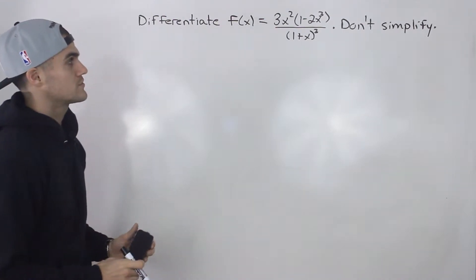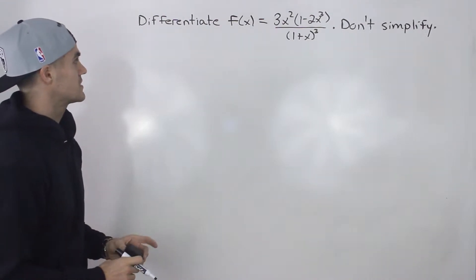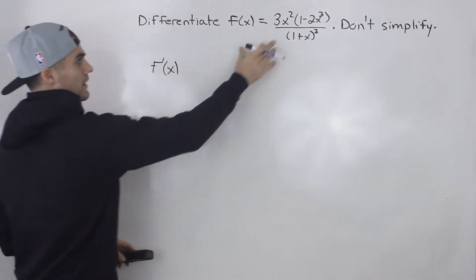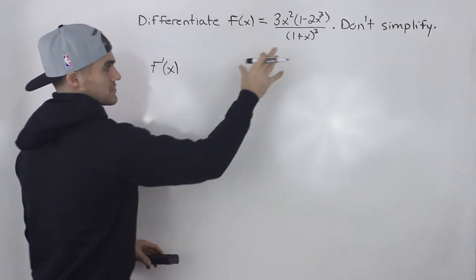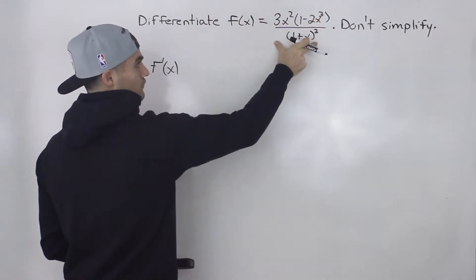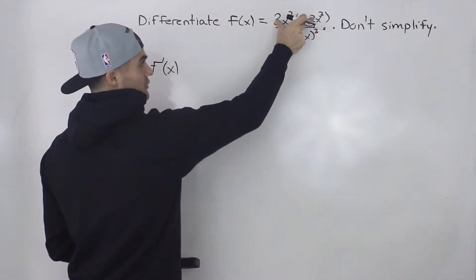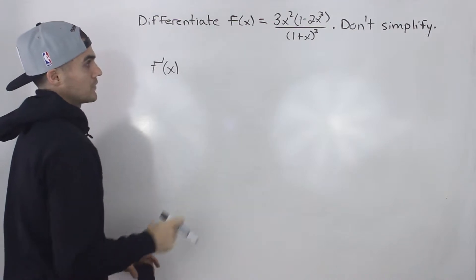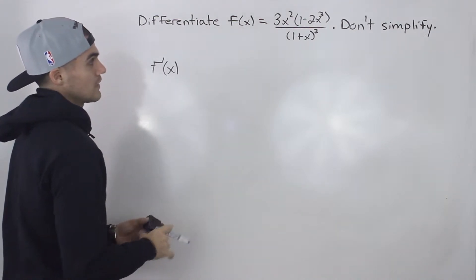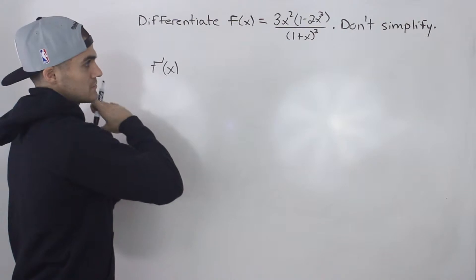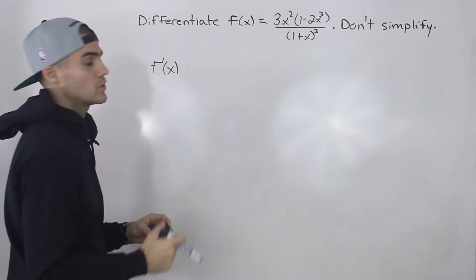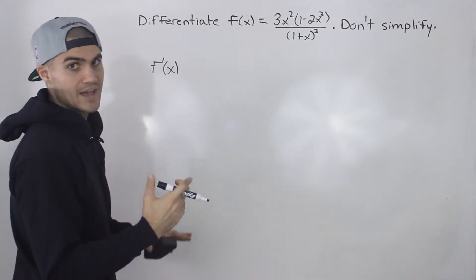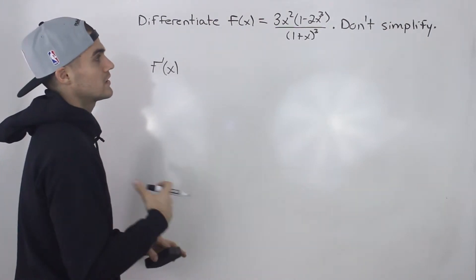We're not going to simplify this. So this is going to test more so what order we are finding the derivative in. Because notice there's a lot going on here. We have a function over another function, and the function in the numerator is the product of two functions. Then we've got composite functions. And we're not going to simplify because as you'll see it's going to be a huge expression — simplifying would take forever. That's not the point of this question. The point is to test the order in which we do things.